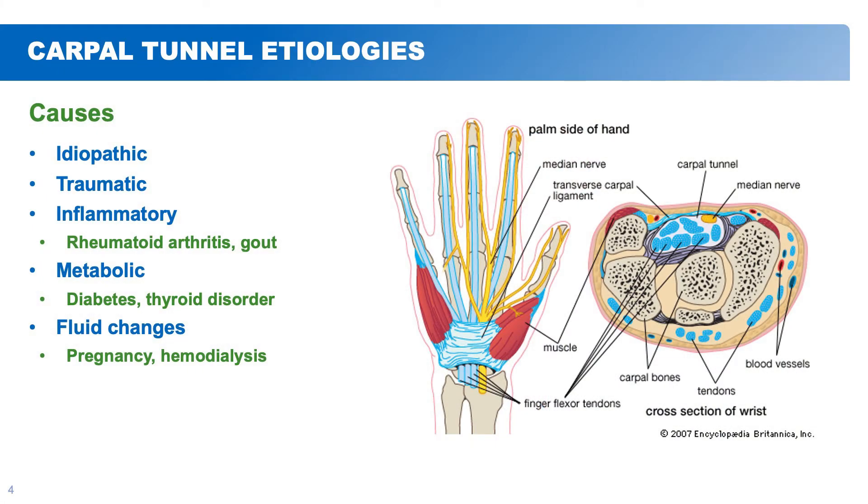So why do you have these symptoms? The most common cause is unknown — it's called idiopathic, meaning it just happens. Sometimes people with distal radius or wrist fractures can experience carpal tunnel complaints because of pressure from swelling, hematoma, or blood collection pressing on the nerve. Inflammatory conditions such as rheumatoid arthritis or gout can deposit substances within the carpal tunnel that cause pressure on the nerve.